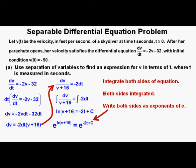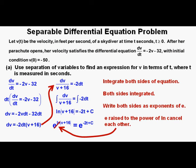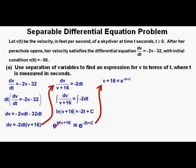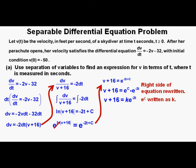To cancel out the natural logarithm on the left side, we raise each side of the equation as powers of Euler's number e. That gives us e to the natural log of |v + 16| equals e to the power of negative 2t plus c. The e and natural log cancel on the left, giving v plus 16 equals e to the negative 2t plus c. We rewrite the right side as e to the negative 2t times e to the c, and since e to the c is a constant, we rename it k. So v plus 16 equals k times e to the power of negative 2t, and solving for v: v equals k times e to the power of negative 2t minus 16.